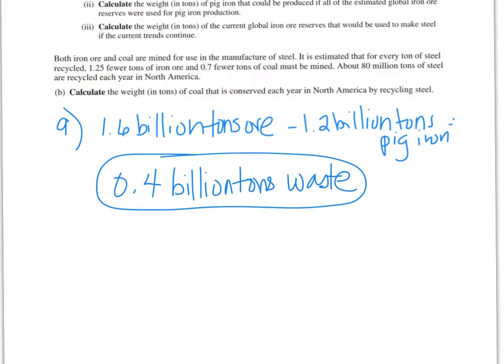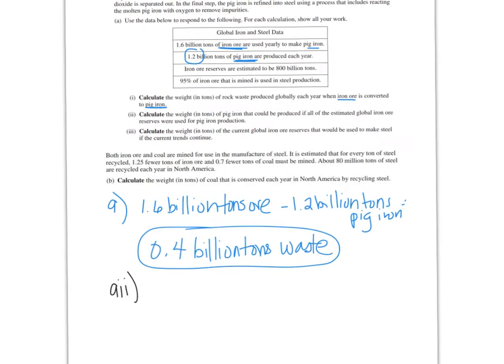The next one is A2. Calculate the weight in tons of pig iron that could be produced if all the estimated global iron ore reserves were used for pig iron production. So this one takes a minute to figure out what they want you to do, because it's saying that we have 800 billion tons in reserve. So 800 billion tons are in reserve. And if we use it all, how much pig iron are we going to get? We can't just multiply 800 billion by either one of these, because we have to subtract out the waste product.